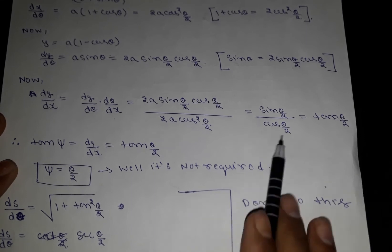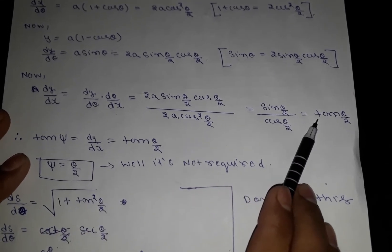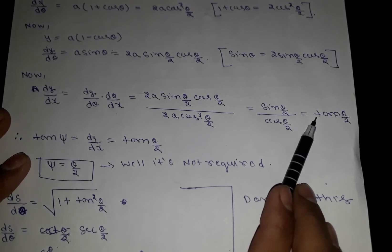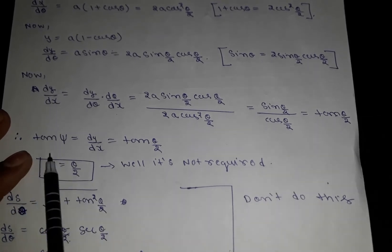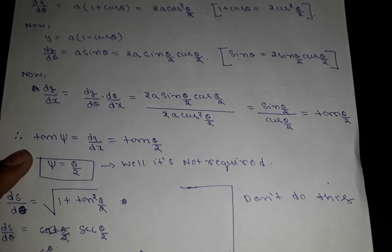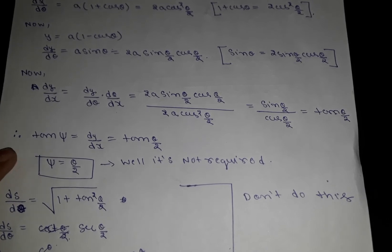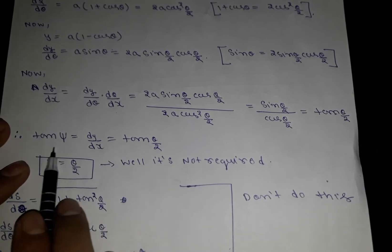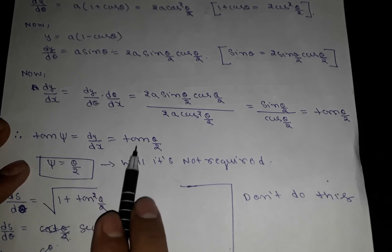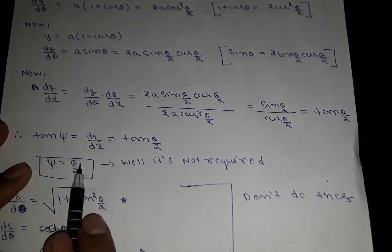So we have dy/dx = tan(θ/2). We know that dy/dx = tan(ψ) when finding the intrinsic equation — I have explained this concept in the playlist. So tan(ψ) = tan(θ/2), which gives ψ = θ/2.